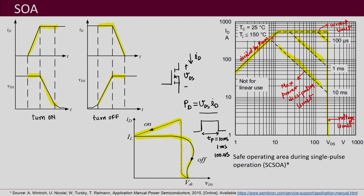So these are the various limits observable in your safe operating area. Accordingly, when we do this kind of switching — called hard switching — we have to be careful whether we are within the SOA limits or not.